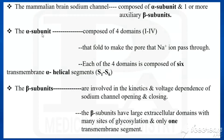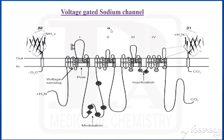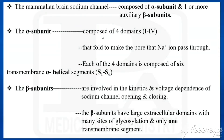The alpha subunit has four domains, labeled 1 to 4. These four domains fold to make the pore through which sodium ions pass.